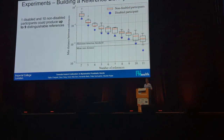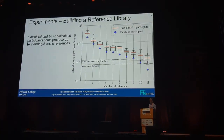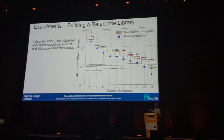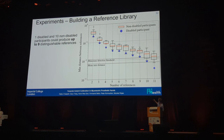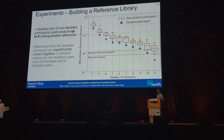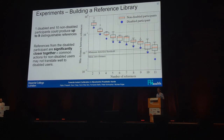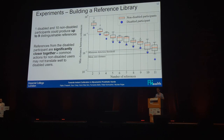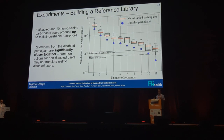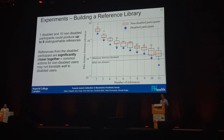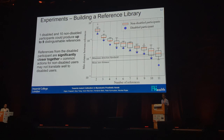We did this for one disabled and 10 non-disabled participants, and found that they can produce up to nine distinguished references. We found that the disabled participant's references are significantly closer together — generally due to muscle weakness if they don't use a prosthetic hand, or muscle heterogeneity post-amputation, which is pretty common.